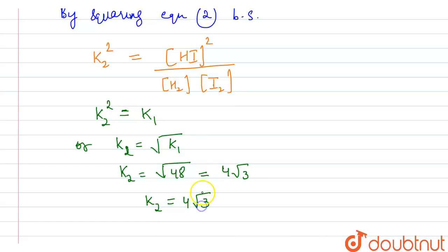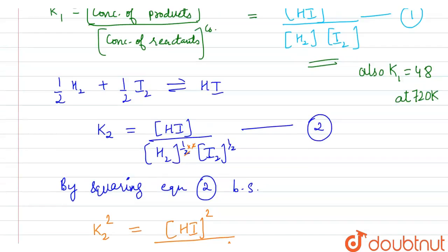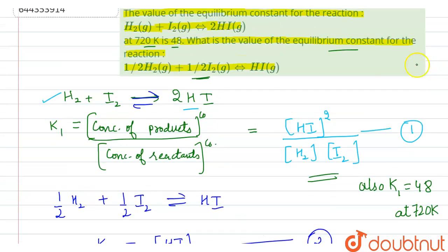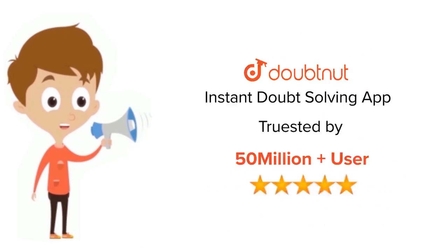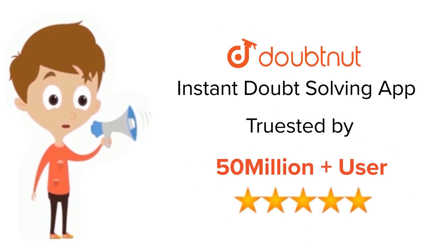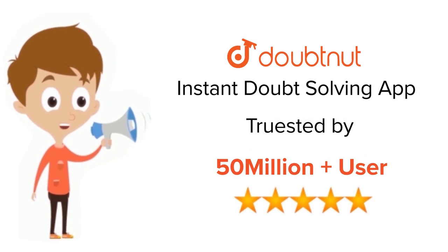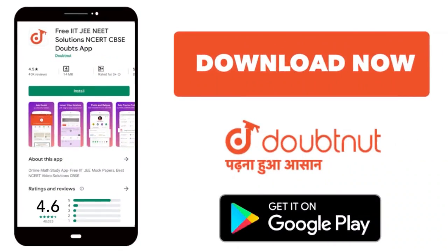So 4√3 is the required answer for this question. For class 6 to 12, IIT JEE, and NEET level, trusted by more than 5 crore students — download DoubtNet today.